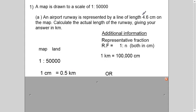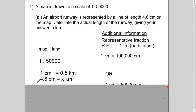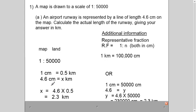And on the map, the length of the runway is 4.6 centimeters. So I will simply write 4.6 centimeters here. And I will say equals to x kilometers, which is unknown factor. And then simply cross multiplication, and you will get the value of x. So this will give you that 4.6 centimeter length is actually equals to 2.3 kilometers. So this is one way of solving it.